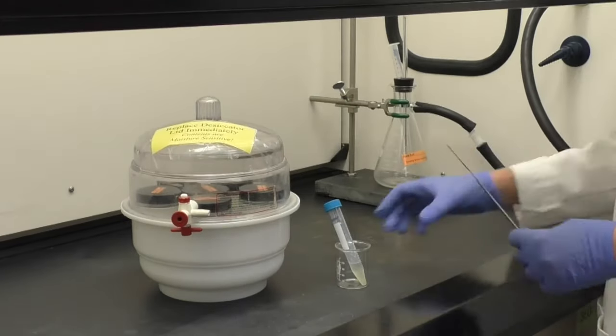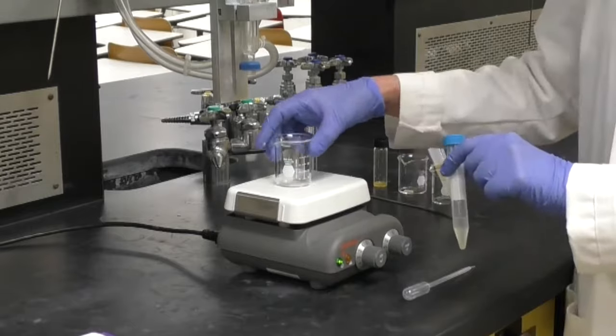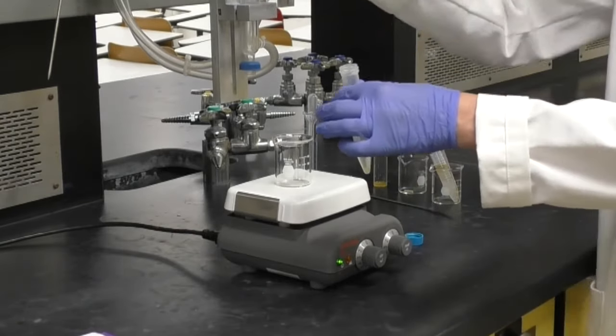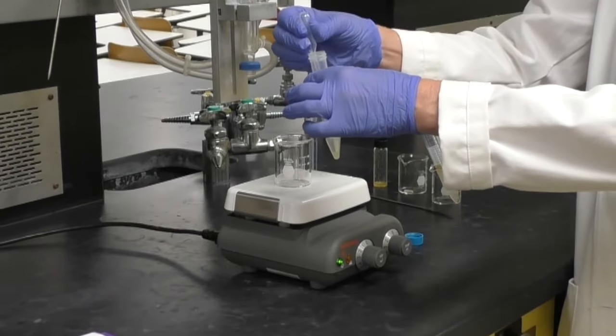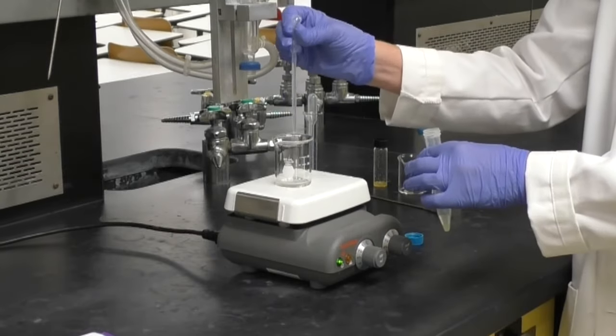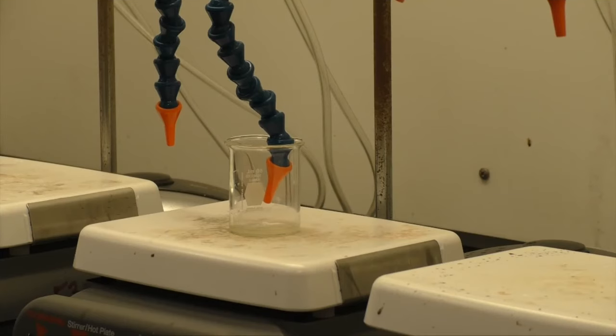Allow the sodium sulfate to separate from the liquid and then pipet the liquid into a 50 mL beaker. Use the blow-down station again to remove any remaining ether. A residue of limonene will remain.